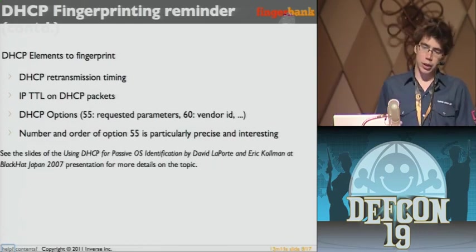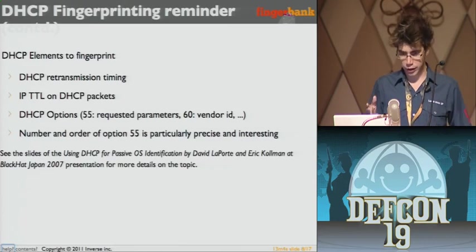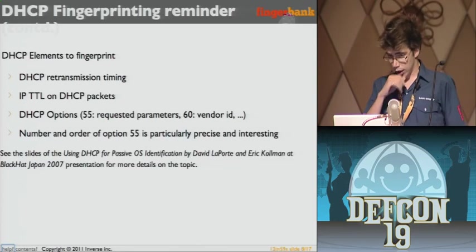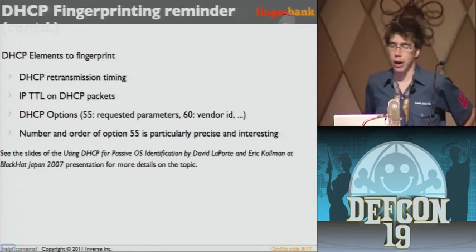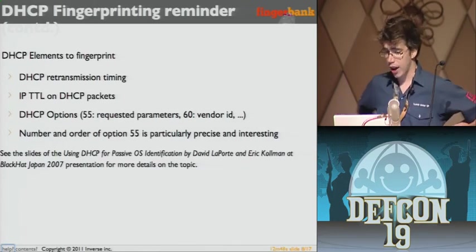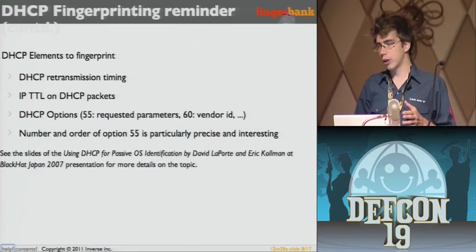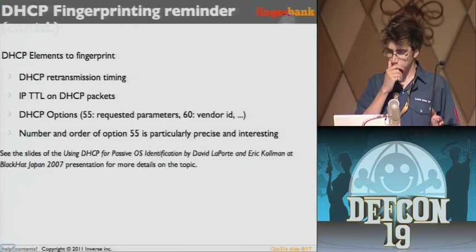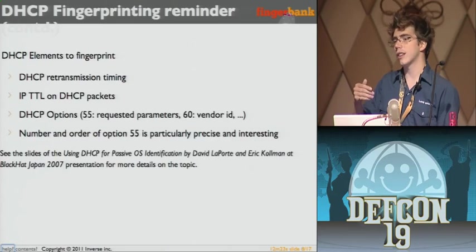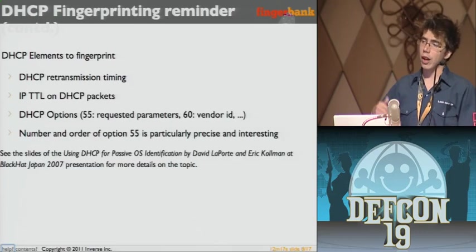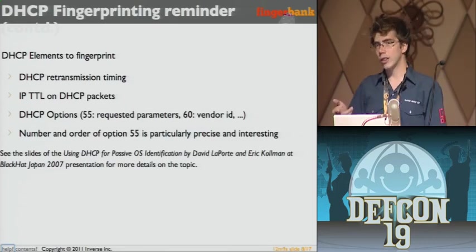What is possible to fingerprint on DHCP? You could focus on retransmission timing, the IP TTL on packets, but the greatest thing — what we've been using for PacketFence — is option 55, the parameter request list. DHCP is a key-value thing: you request a list of options and the server sends you the values. Option 55 is really interesting because it covers the stuff we use HTTP for, plus a lot of options we don't use but are still there — hostname, domain name, and stuff like that. For more detail on DHCP, there was a Black Hat Japan presentation by Eric Coleman and David Laporte that you can check out.